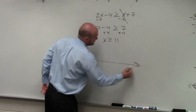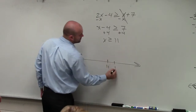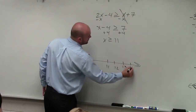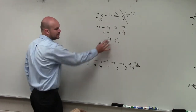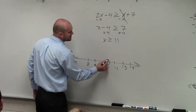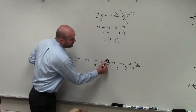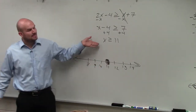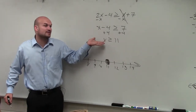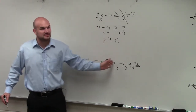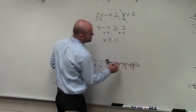Now I create my number line: 8, 9, 10, 11, 12, 13, 14. I go to 11 and make a nice big circle. Since it's greater than or equal to, 11 is part of our solution. We can say what numbers are greater than 11 — obviously those are numbers going to the right, so we shade to the right.